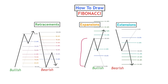A Fibonacci expansion takes a general measurement of the impulsive move and projects it out to show where price is pushing towards if the trend continues. For example, reaching the 127.2 expansion level means price pushed 27.2 percent past the high of the impulsive move, and the 113.1 level means it pushed 13.1 percent past that high — with 100 representing the high itself. Traders often use these levels as price targets or take-profit points within their trades.